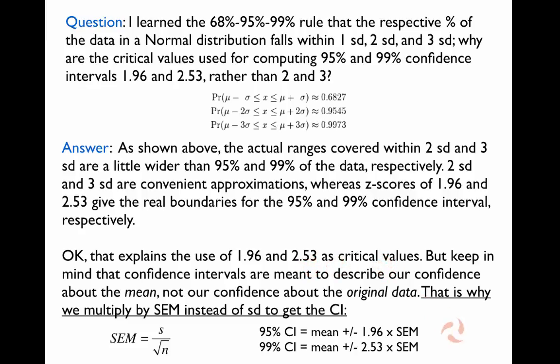But keep in mind that confidence intervals are meant to describe our confidence about the mean, not our confidence about the original data. That is why when we compute confidence intervals, we multiply by the standard error of the mean instead of standard deviation to get the confidence interval. The standard error of the mean can be estimated for a single sample as the standard deviation divided by the square root of n, where n is the sample size. The 95% confidence interval equals the mean plus or minus 1.96 times the standard error of the mean, and the 99% confidence interval equals the mean plus or minus 2.53 times the standard error of the mean.